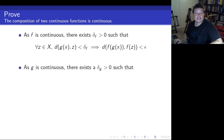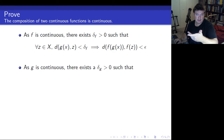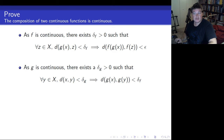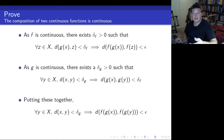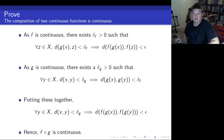As g is continuous as well, there's a delta g greater than zero. G needs to be continuous at x, so for every y in X, if the distance between x and y is less than delta g, their images under g are less than delta f apart. That conclusion looks exactly like the hypothesis of the first implication. So we can chain them together: for every y in X, the distance between x and y being less than delta g implies that the distance between f(g(x)) and f(g(y)) is less than epsilon. Hence f of g is continuous.